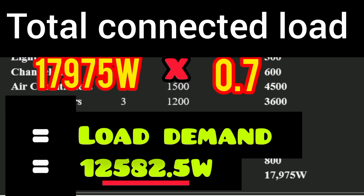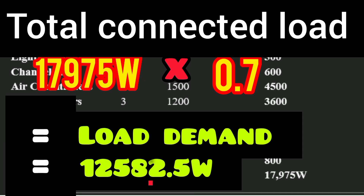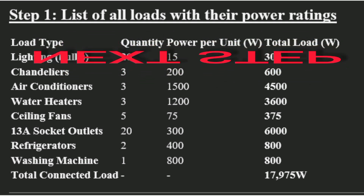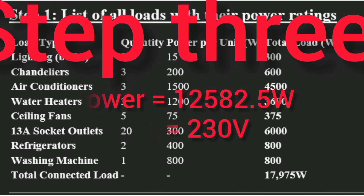This demand load is what we work with — the maximum power used in the installation at any point will not exceed 12,582.5 watts. In the next step we calculate the current, which is our main interest. We have the total demand power and for a single-phase system we have 230 volts.